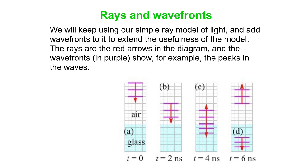We're taking our ray model of light and adding what are called wave fronts — those are the purple lines. You can imagine those as the peaks in the wave. It's typically our ray model of light.